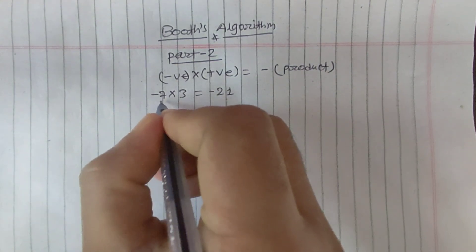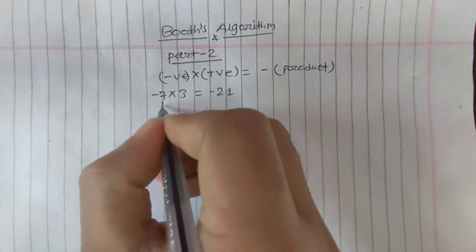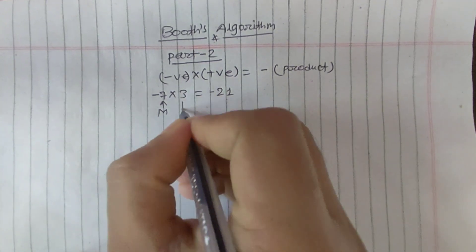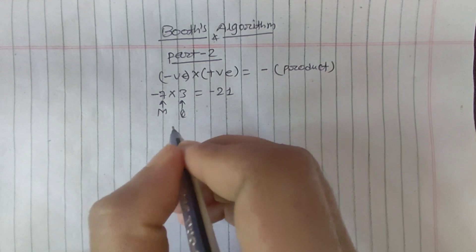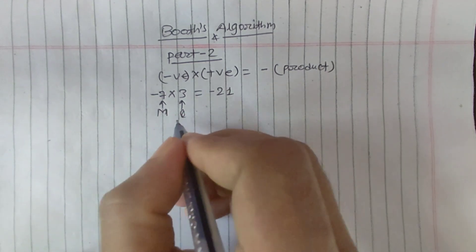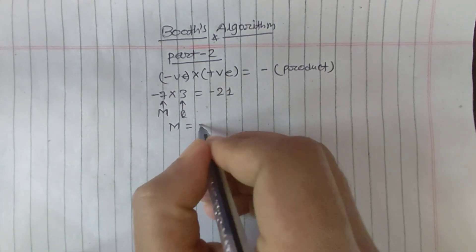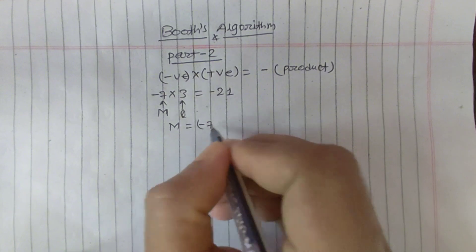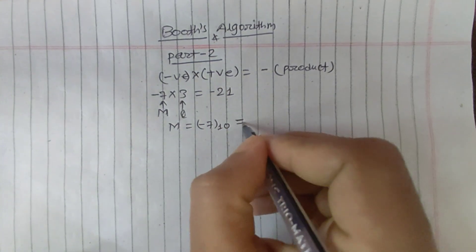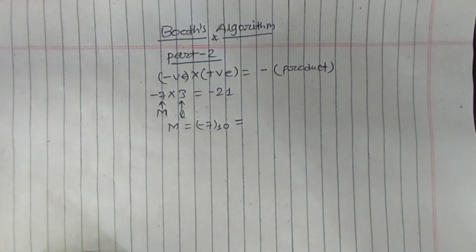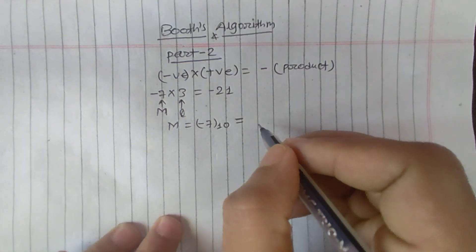Let us suppose 7 is M and 3 is Q, as per Booth's algorithm. So the value of M is equal to minus 7 in base 10, and we need to convert this minus 7 into binary format.